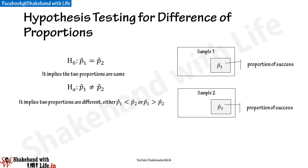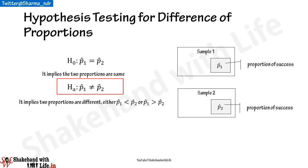If two samples are drawn from different populations, you might want to know whether the difference of the proportions of success is significant or not. In such situations, the null hypothesis will be H₀ such that p1-cap equals p2-cap, implying the two proportions are the same. The alternative hypothesis will be Hₐ such that p1-cap is not equal to p2-cap, implying the two proportions are different — either p1-cap is less than p2-cap or p1-cap is greater than p2-cap.